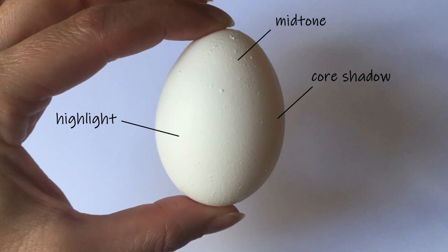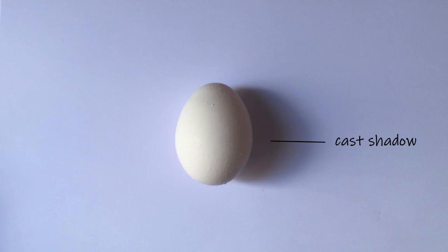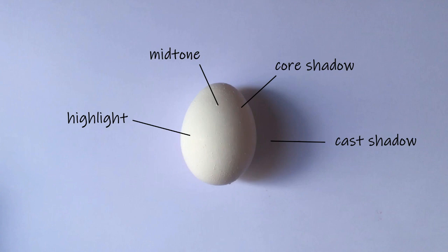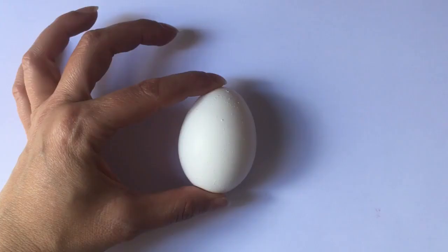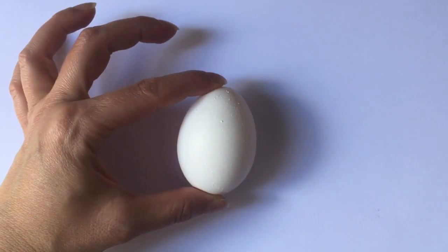Now when I put my egg down on the white paper, I get a cast shadow, which is the shadow that the egg is casting onto the paper. You can still see the highlight, the core shadow, and the mid-tone. And something else really fascinating happens. A rim of light appears on the shadow side of the egg. You can see that when I lift it up, that rim of light disappears. And when I put it back down, there it is.